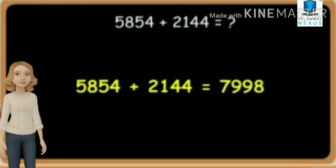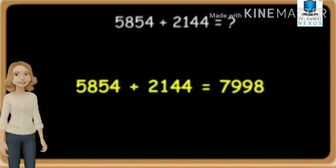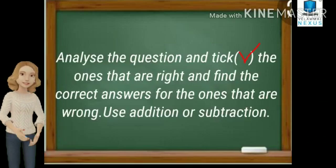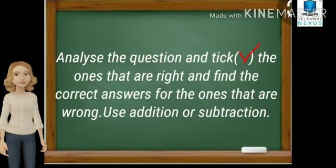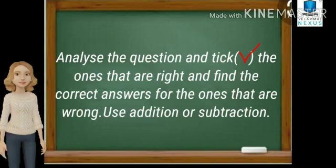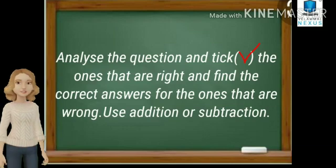When you add 5,854 plus 2,144 we get the answer 7,998. Today's topic is mixed word problem-solving. Here is a question: analyze the question and tick the ones that are right and find the correct answers for the ones that are wrong. Use addition or subtraction.